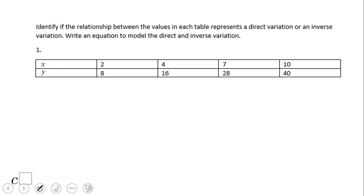So that is very simple: two times four is eight, right? Four times four is sixteen, seven times four is twenty-eight, ten times four is forty. So an easy way to see this is a type of variation.